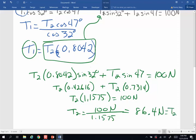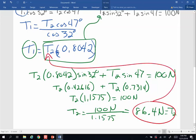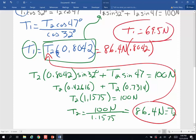Now how do I solve for T1? Well, now that I have T2, T1 is really easy. I am going to take this value for T2, and I'm going to plop it back into there. And so if I get 86.4 newtons times 0.8042, what do I get? T1 equals, when I do that, 69.5 newtons. Not too bad, is it? All right, we'll see you next time. So there we go.